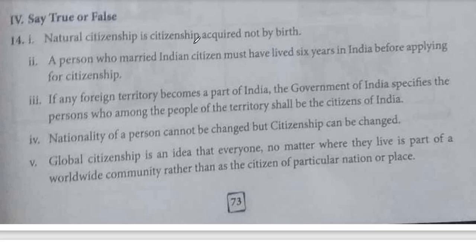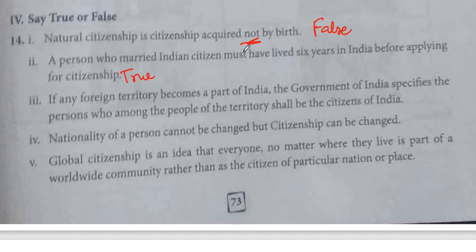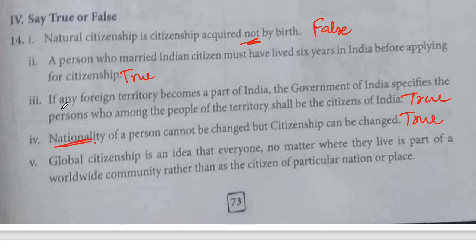True or false: Natural citizenship is citizenship acquired not by birth — False, because it is acquired by birth. A person who is married to an Indian citizen must have lived six years in India before applying for citizenship — True. If any foreign territory becomes a part of India, the Government of India specifies who among the people of that territory shall be citizens of India — True. Nationality of a person cannot be changed by citizenship, but citizenship can be changed — True; nationality refers to the country of origin and remains the same.